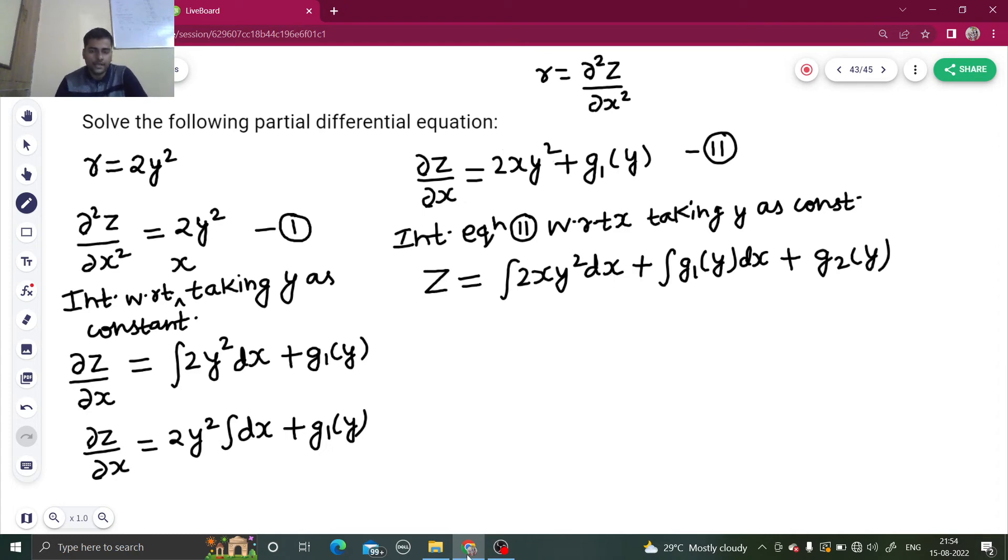Now here y is a constant, so 2y squared comes out. Integration of x dx is x squared by 2. So 2y squared comes out and x square by 2. 2 to cancel. So x squared y squared is what we are getting.